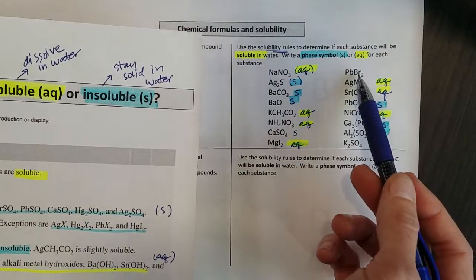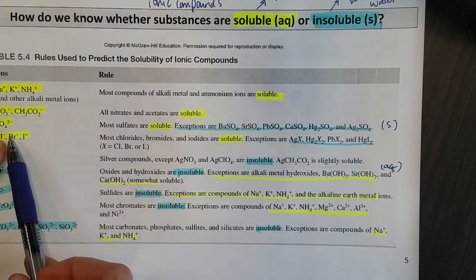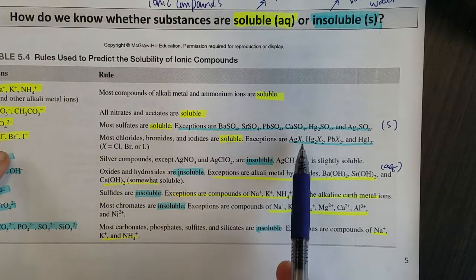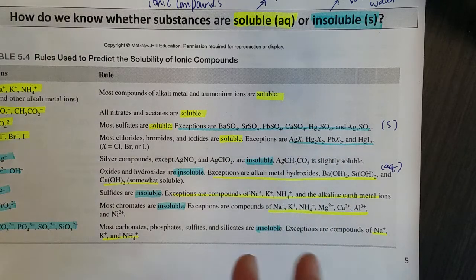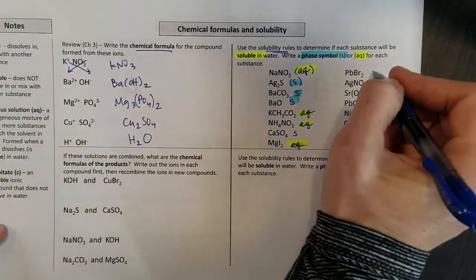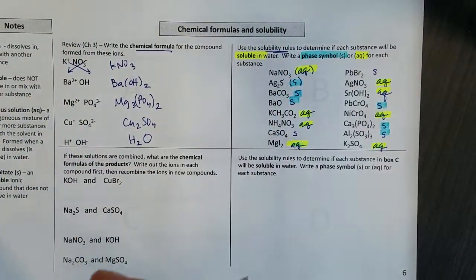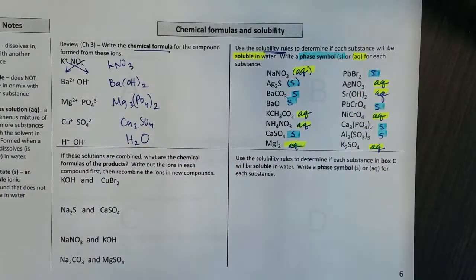Lead bromide, PbBr2. So if I look here, bromides are usually soluble, but exceptions are with silver and mercury and lead, all those heavy metals we try to avoid. So again, that means it's going to be solid. So let's come over here. And I would say that my lead bromide is solid. And I'm just color coding so you can see the consistency here.